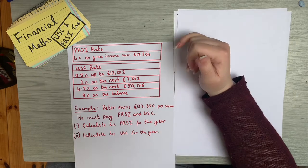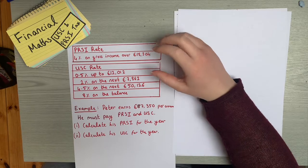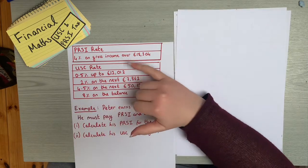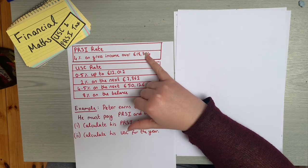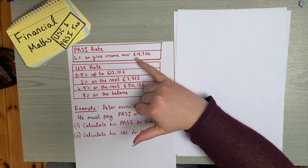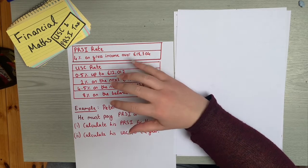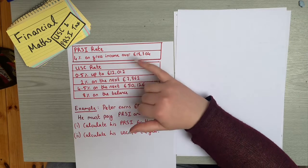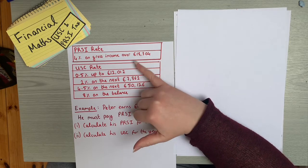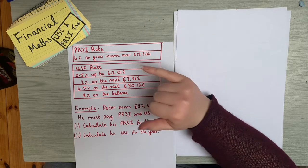PRSI is straightforward enough to work out. It's four percent on the gross income over €18,304. So for someone who earns less than €18,304, they wouldn't have to pay PRSI at all. It's only on the income earned above this threshold. So if someone was earning €19,000, they'd only pay four percent on the income above €18,304 — that would be around €696.